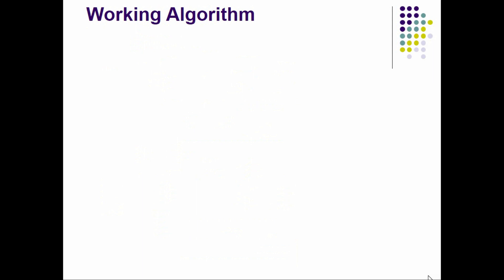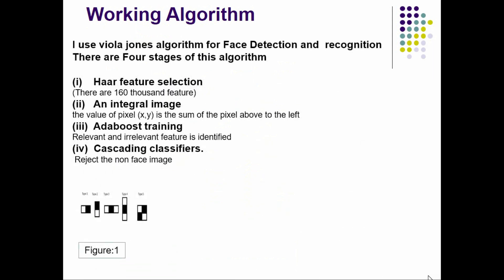The working algorithm: I use the Viola-Jones algorithm for face detection and recognition. There are four aspects: first, Haar feature selection — there are 116,000 features; second, integral image — the value of pixel x,y is the sum of the pixels above and to the left; third, AdaBoost training — relevant and irrelevant features are identified; and fourth, cascading classifiers — which reject non-face images. Here I show you the graphical representation of this algorithm.